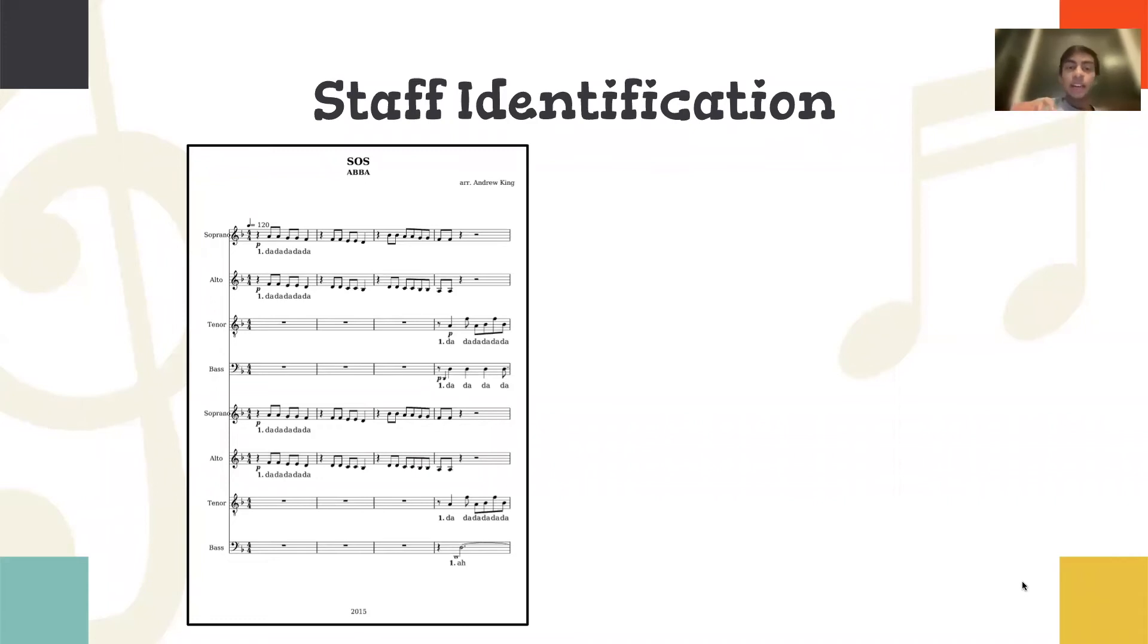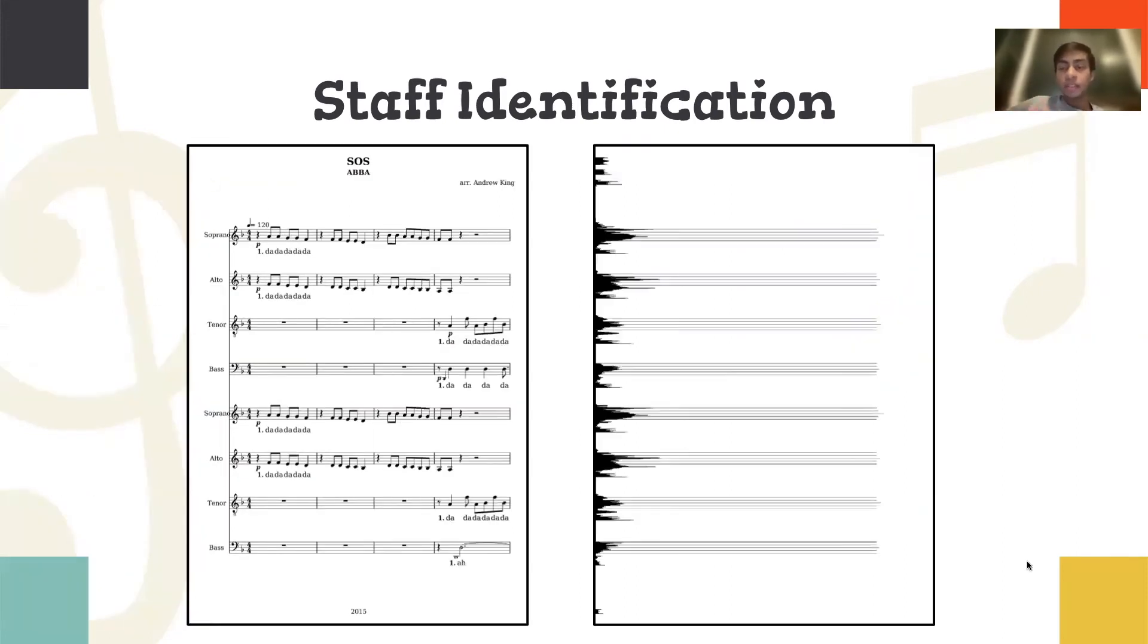So the next stage is staff identification, which involves taking a vertical scan of all the rows in the image and counting the number of black pixels in order to form an image of the frequency of black pixels as shown in the image. And here we can see where the staff lines would occur so that we have a baseline for the symbols in order to position them and decipher what note it is.